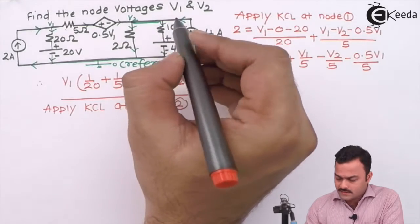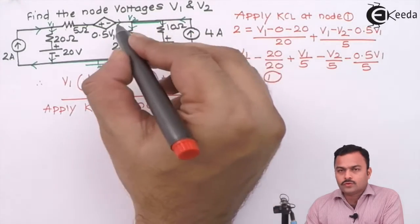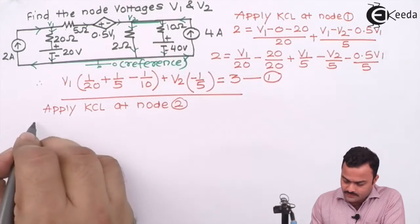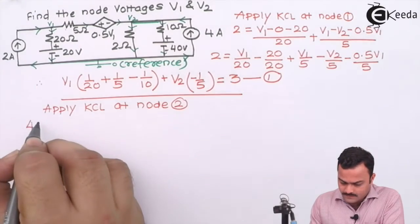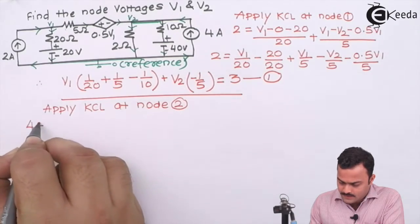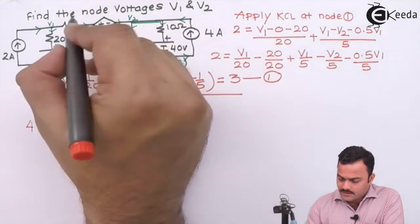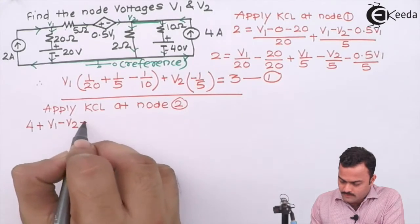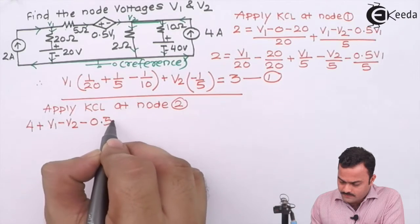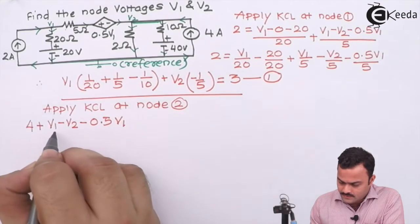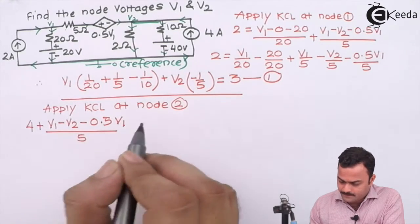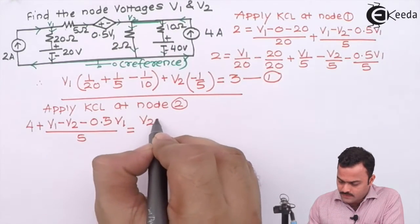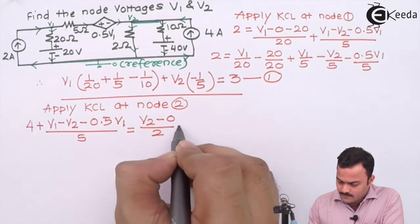Here four branches are connected to this node. Out of that, two are incoming. One is a constant current source of 4 ampere, so 4, plus this is also incoming current. Already we have written the equation as V1 minus V2 minus 0.5 V1 divided by 5.